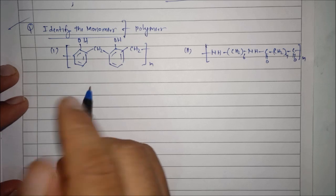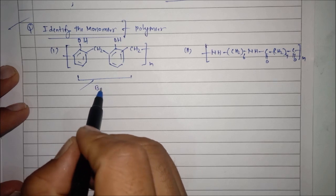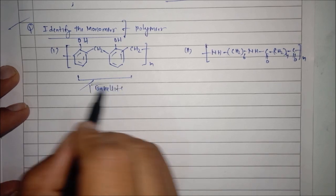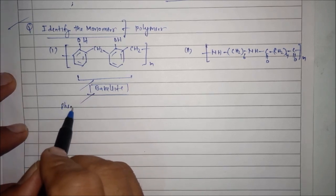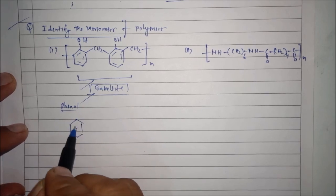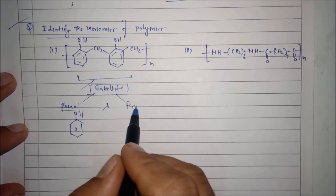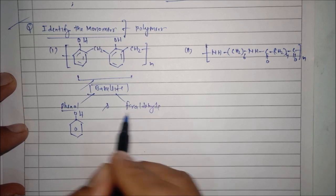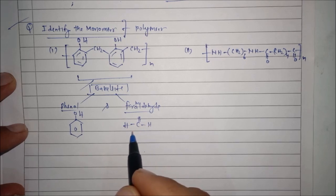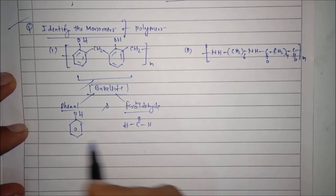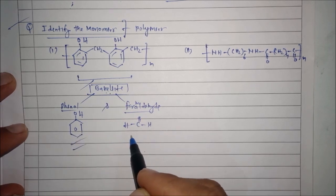For the first structural arrangement, I can observe this polymer is called bakelite. In bakelite formation it needs two monomers: one is phenol and another one is formaldehyde, that is HCHO, methanol. So bakelite is a polymer and its monomers are phenol and formaldehyde.